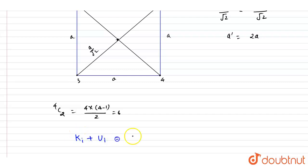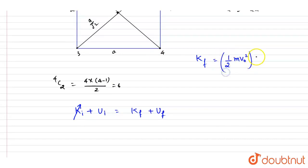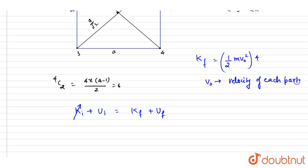Initially the potential energy is some value, and finally we want to find the kinetic energy. By symmetry, all four particles have the same speed v₀. The final kinetic energy of the system is the sum over all four particles, giving an expression in terms of v₀.